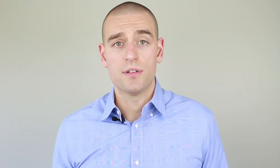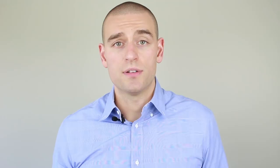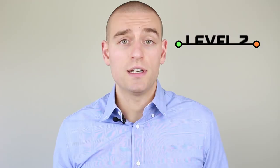Depending on how the ETF is structured, you may be subject to two levels of withholding tax. In their 2016 white paper titled Foreign Withholding Taxes, my PWL colleagues Justin Bender and Dan Bortolotti explained it this way: you can think of Level 1 foreign withholding tax like a departure tax that you pay when taking a flight to Canada from any foreign country. Level 2 withholding tax is tax that you pay to the US government when an overseas flight has a layover in the US.